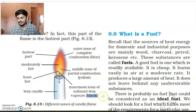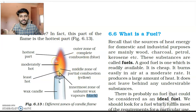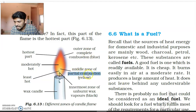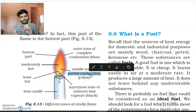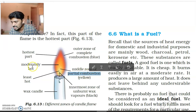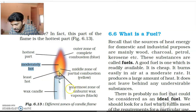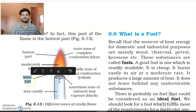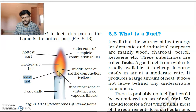The blue outer zone is the hottest part because there is complete combustion there — the wax burns completely, making it the highest temperature zone. The middle yellow-orange zone is moderately hot, because some wax particles are completely burnt but others are left out, resulting in partial combustion. The innermost zone has unburnt wax and is the least hot part of the candle flame.